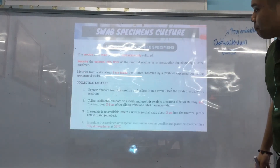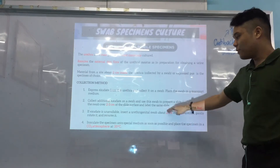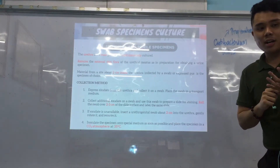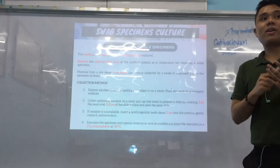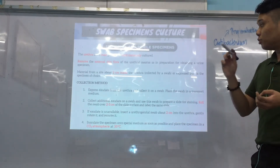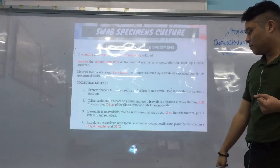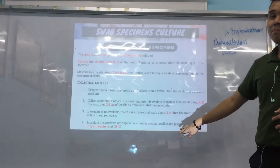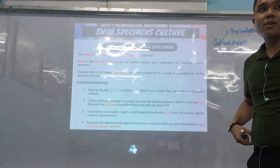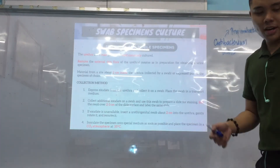For the collection method: express exudate from the urethra and collect on a swab in transport medium. If you have enough material, roll the swab over a slide for microscopic exam — we also examine it by Gram stain. If no exudate is available, insert the swab 2 cm inside the urethra, gently rotate, remove, then inoculate the specimen in medium as soon as possible and place it in a CO2 atmosphere at 35°C, because we are looking for Neisseria gonorrhoeae — the common cause of gonorrhea.